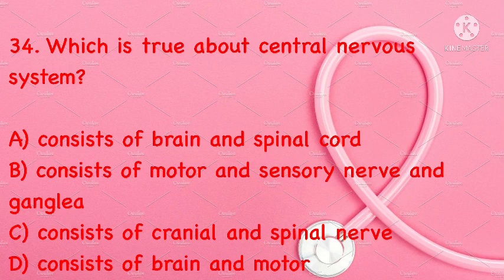Which is true about the central nervous system? It consists of brain and spinal cord; consists of motor and sensory nerve and ganglia; consists of cranial and spinal nerve; or consists of brain and motor. Correct answer is A: consists of brain and spinal cord.